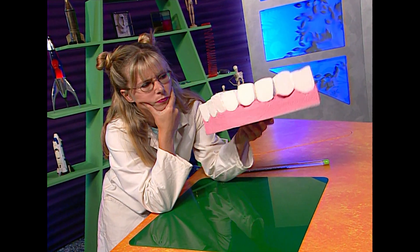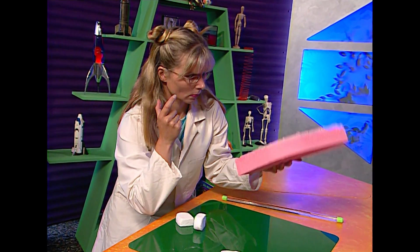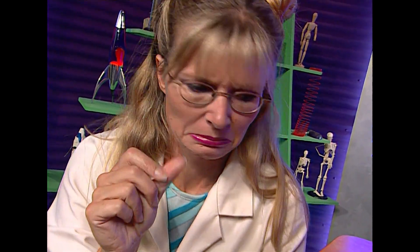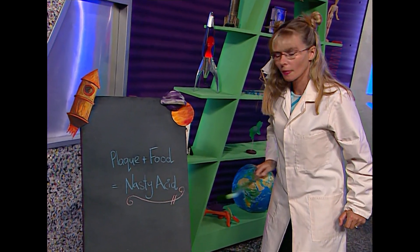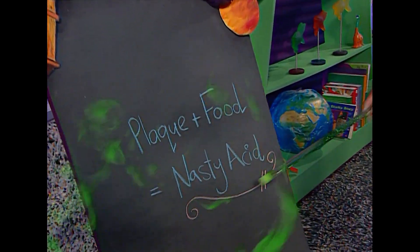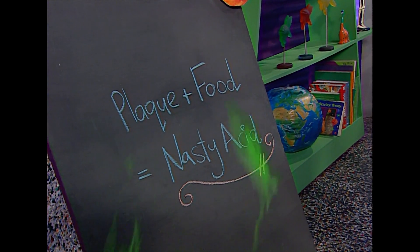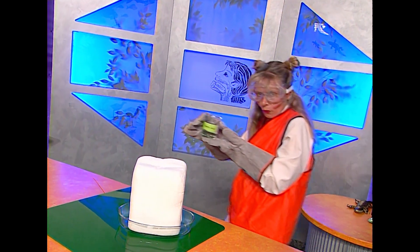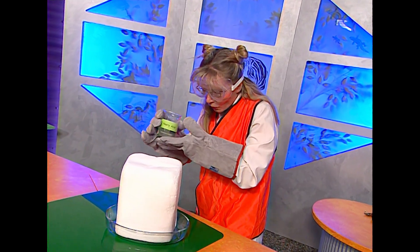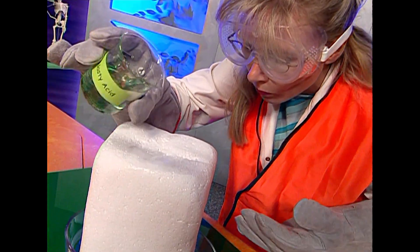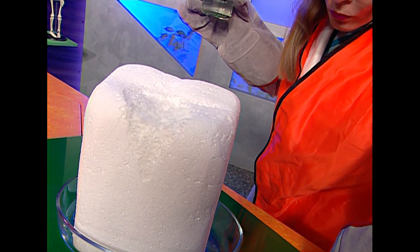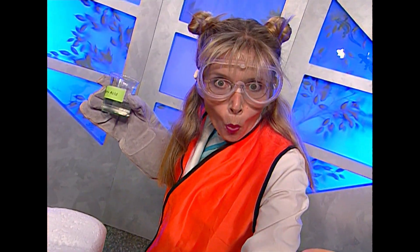For years scientists wondered what strange and sinister force made teeth fall out. But now scientists, dentists, orthodontists and many other experts know that our teeth are covered in an invisible layer called plaque. And when the bacteria in plaque gets together with the food we eat, the result is a nasty acid that can slowly eat away our teeth.